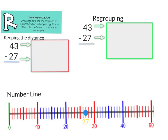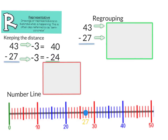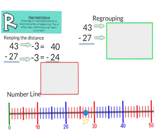Next we move on to representational — drawings or representations to illustrate what is happening. This is often referred to as the semi-concrete. We'll start off with keeping the distance. So 43 minus 27. I'm going to make this problem a little bit easier by subtracting 3 from 43 and 3 from 27, taking the same exact number away from both numbers, which leaves me with 40 minus 24. We are 6 away from 30, and then 30 is 10 away from 40, which gives me a difference of 16.